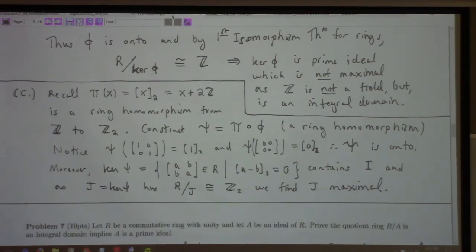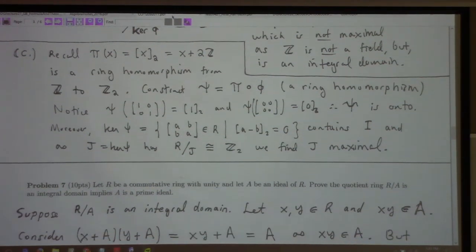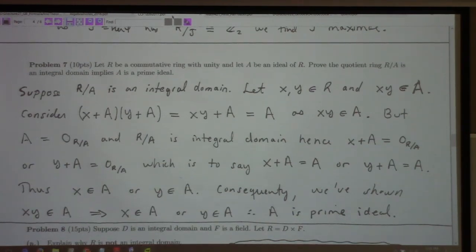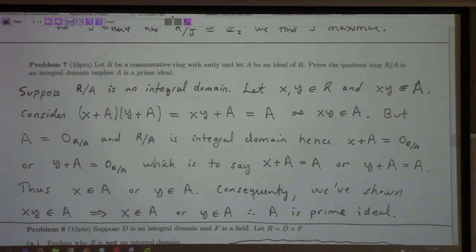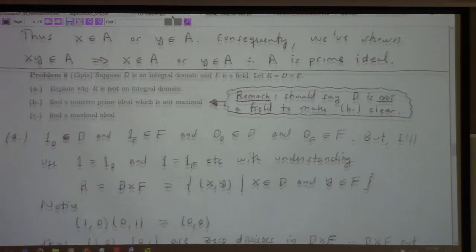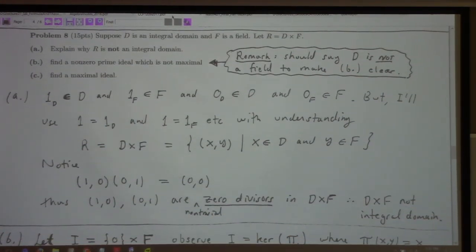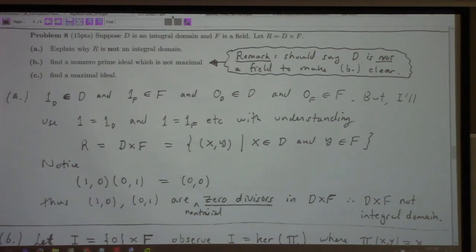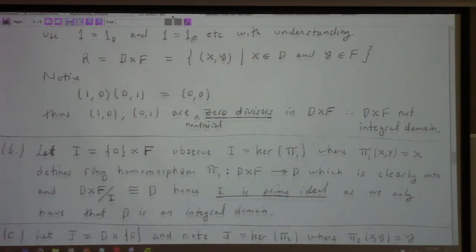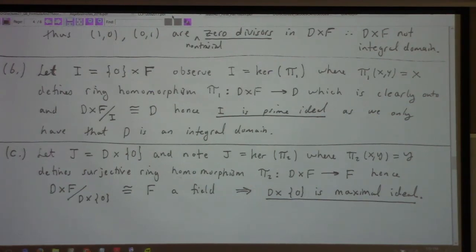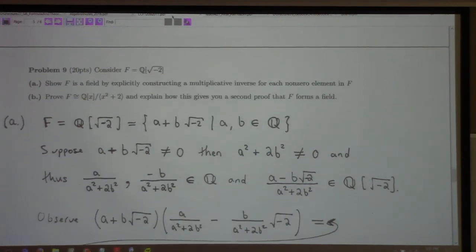The larger idea: if you want to find a maximal ideal, find a way to use the isomorphism theorem to create a field in the image. You could do this with 3, 7, 11, 13 — pick your prime. For problem 7, we did the if-and-only-if proof in class; I just made it an implication to make it easier. Problem 8: either divide by D or by F — the details require using 0 cross D or F rather than D or F directly, because otherwise we're modding by something not in the set.